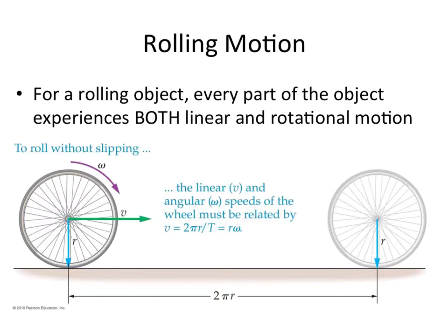Hello again everybody and welcome back. So far this chapter, in chapter 10, we've been talking about rotational motion, rotational kinematics, and objects spinning around on an axis. In many cases that axis is stationary, like the center of a record turntable, or possibly a CD or a wheel.